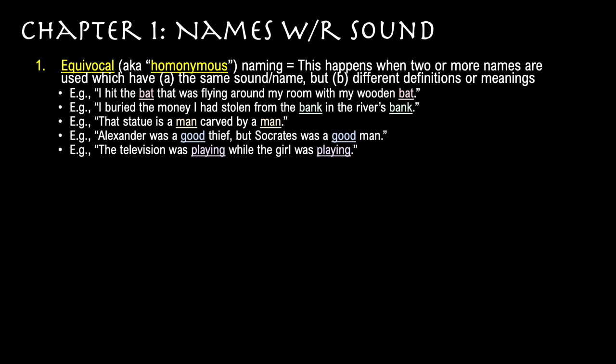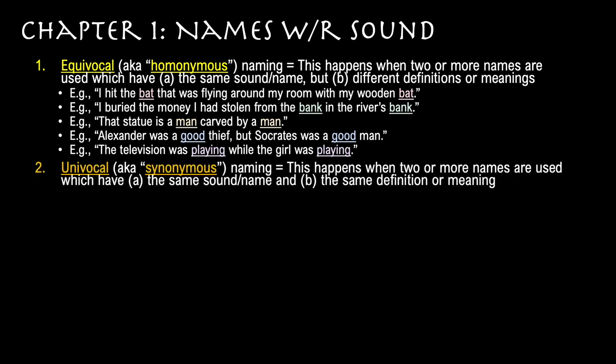Equivocal or homonymous naming happens when two or more names are used with the same sound or name but different definitions or meanings. This is opposed to univocal or synonymous naming. Univocal naming happens when two or more names are used with the same sound but also the same definition or meaning. Sometimes in ordinary English, we'll say that two words are synonymous even though they don't have the same sound, precisely on the grounds that they have the same definition or meaning. This is a slightly different usage than Aristotle's. Let's stick to using the word univocal, since it always means the usage of two or more names with the same sound and the same definition or meaning.